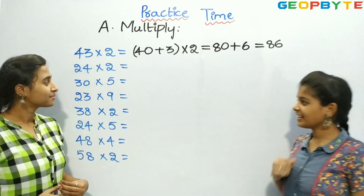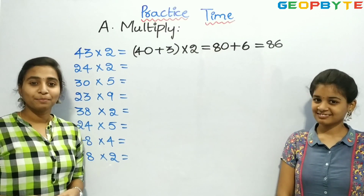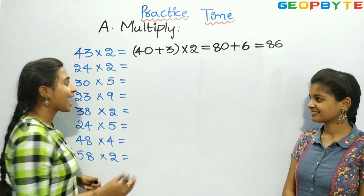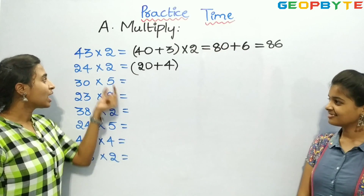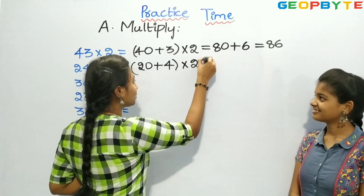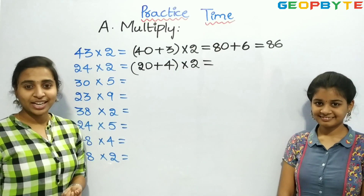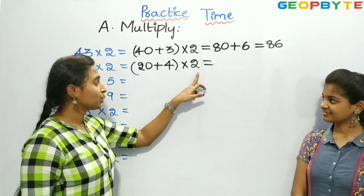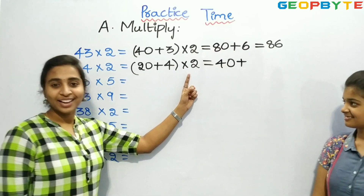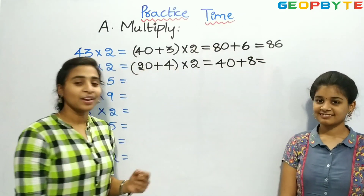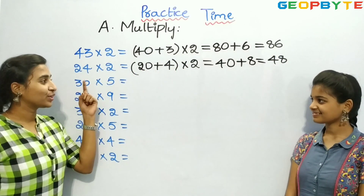Now let us see the next one: 24 into 2. Children, here 24 is the bigger number. So let us split 24 as 20 plus 4, into 2. We need to multiply 20 with 2 plus 4 with 2. 2 twos are 4, and we have a 0, so it is 40. Plus, 4 twos are 8. So 40 plus 8 is equal to 48. So 24 twos are 48.